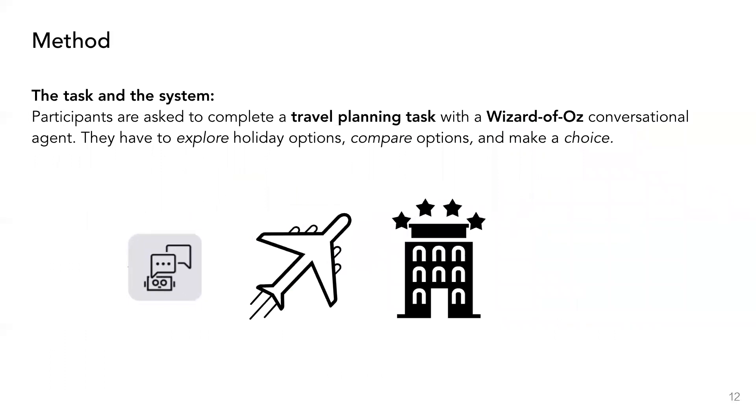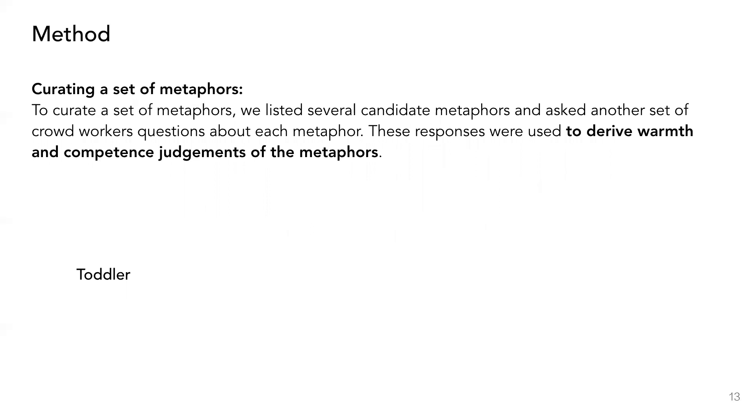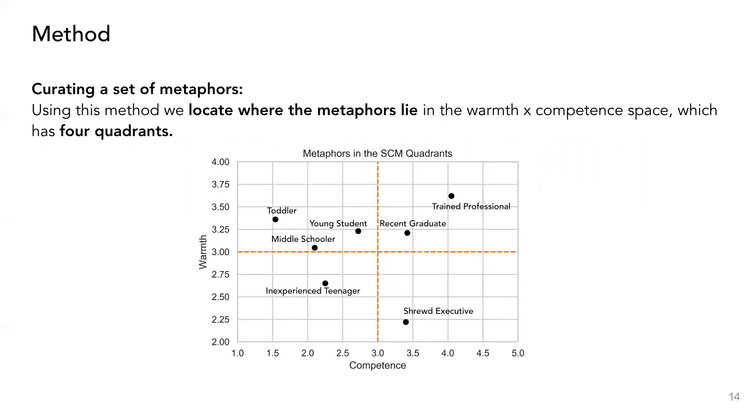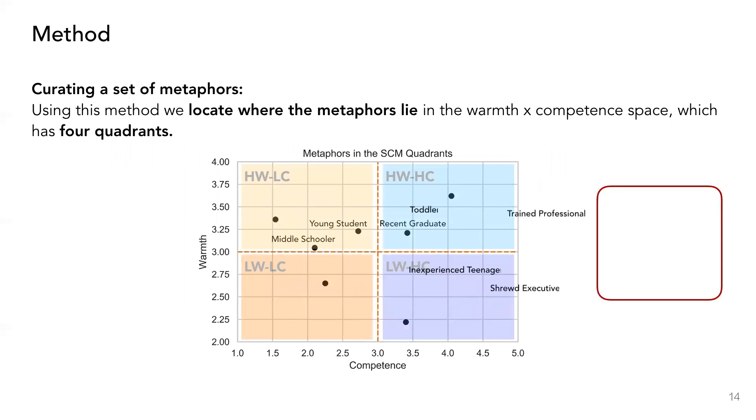Participants in the study were asked to complete a travel planning task with a Wizard of Oz conversational agent. To curate a set of metaphors, we listed several candidate metaphors and asked another batch of crowd workers questions about these metaphors. These responses were used to derive the warmth and competence levels projected by the metaphors. This allowed us to locate where these metaphors lie in the warmth and competence space, which has four quadrants: high warmth-low competence, high warmth-high competence, low warmth-low competence, and low warmth-high competence. For the first study, we select one metaphor per quadrant, giving us four study conditions. Along with the control condition where participants are shown no metaphor, these form the five conditions in study one.